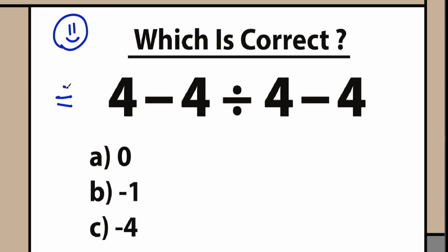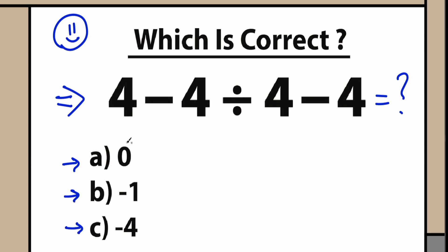Here you can see this question in the middle of the screen. We have 4 minus 4 divided by 4 minus 4, and we need to get it down to one value. We have three options: option A, option B, option C. You can pause the video and write your solution in two or three lines, and we can check our answers at the end of the video.